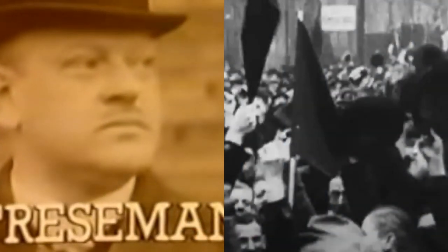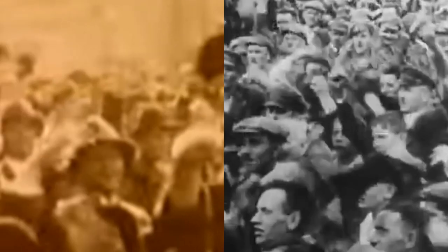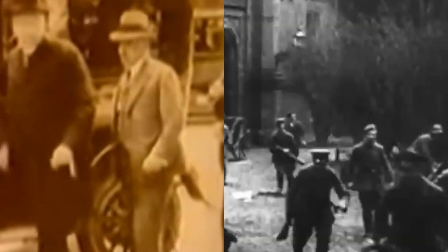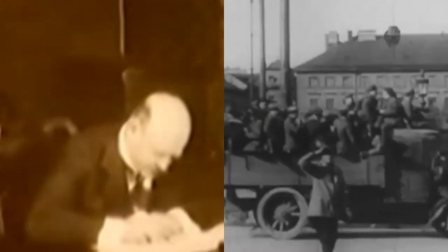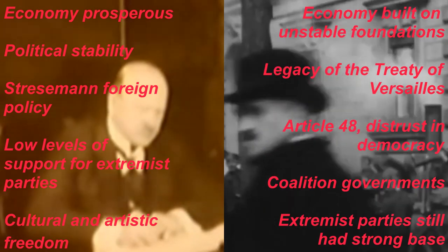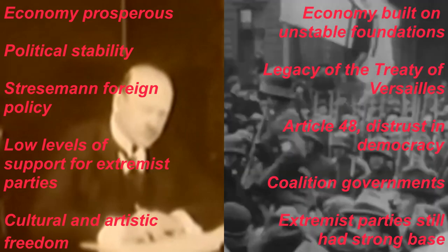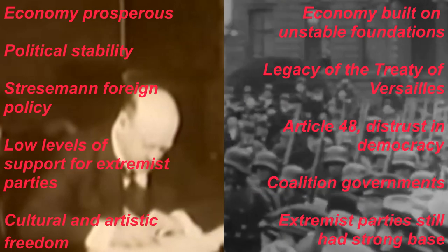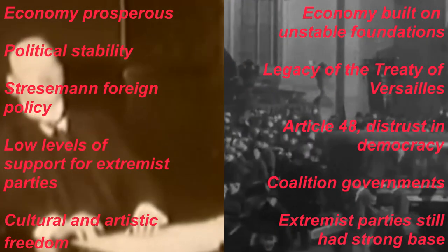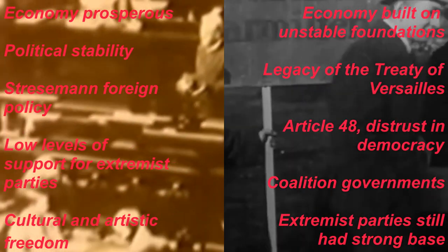Hopefully what you should get a sense of in your table is that you have got some things that were good, but also some things that were not so good. The point is that the Weimar Republic was at a crossroads in 1928. Nobody really knew it was at a crossroads, because nobody knew what was coming next. But as many things as were positive about the Weimar Republic, there were also some negatives. What I'm trying to get across to you in this lesson is that things could have gone either way.